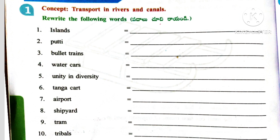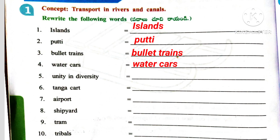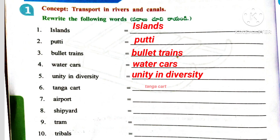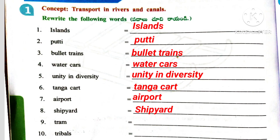Worksheet 4. Here the concept is Transport in Rivers and Canals. Rewrite the following words: 1st one: Islands. 2nd one: Putti. 3rd one: Bullet trains. 4th one: Water cars. 5th one: Unity in diversity. 6th one: Tanga cart. 7th one: Airport. 8th one: Shipyard. 9th one: Tram.